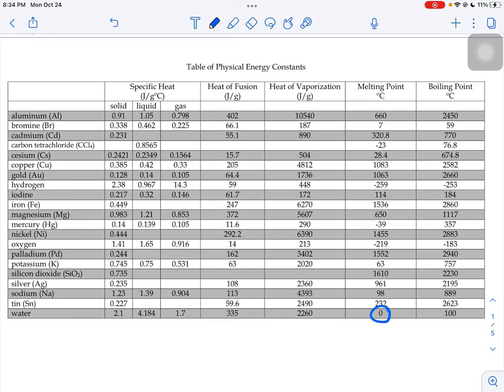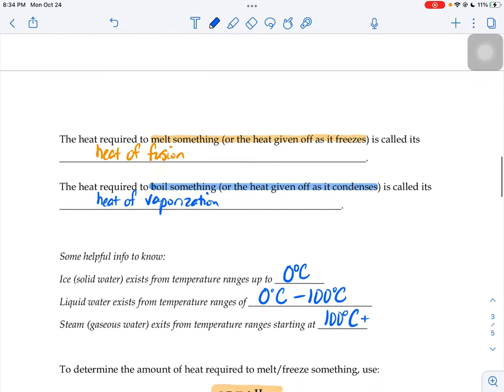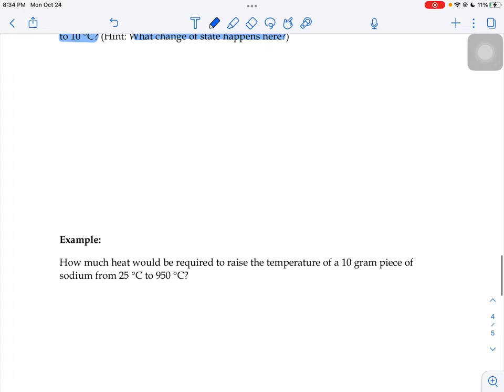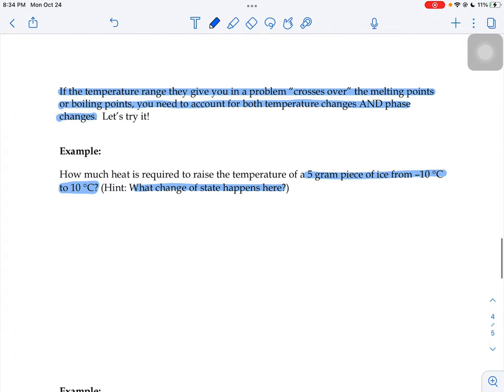Any time that happens where you're crossing over the melting point or the boiling point, you're going to have what we call a multi-step problem. There's a few different parts to it. The first thing you're going to do is draw a rough sketch of that graph that we were just looking at where it goes up, over, up, over, up.